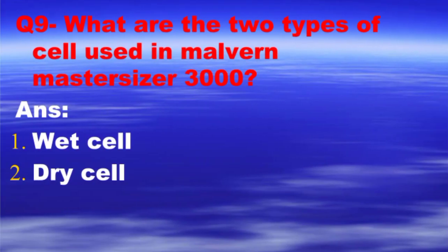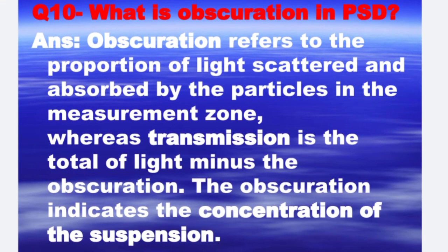Next is: what are the two types of cells used in Malvern Mastersizer 3000? The answer is: number one, wet cell, and number two, dry cell. Next is: what is obscuration in particle size distribution? The answer is, obscuration refers to the proportion of light scattered and absorbed by the particle in the measurement zone. Transmission is the total light minus the obscuration. The obscuration indicates the concentration of the suspension.